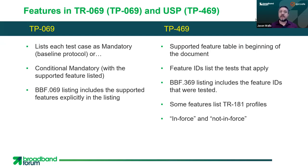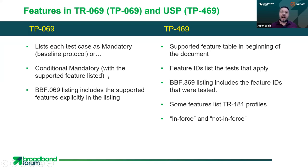It's a little different for TR69 versus USP. For TP69, each test case is listed as either mandatory — meaning it tests the baseline protocol — or conditional mandatory, where it's specified which supported features would require you to run that test. The BBF.069 listing includes the supported features explicitly, and I'll show you that in a minute.